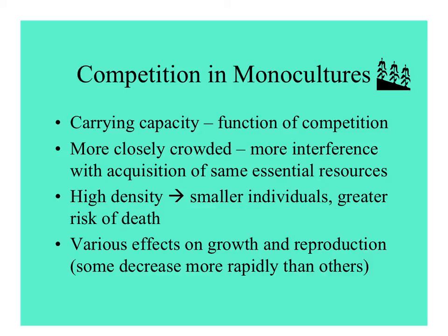The more closely the plants are crowded together, the more interference they have with one another. When they're grown at very high density, individuals are smaller and more likely to die. You can see this in a garden: when you sow a bunch of seeds, to get plants bigger, you have to thin them as they start to grow — that is, pull some of them out.